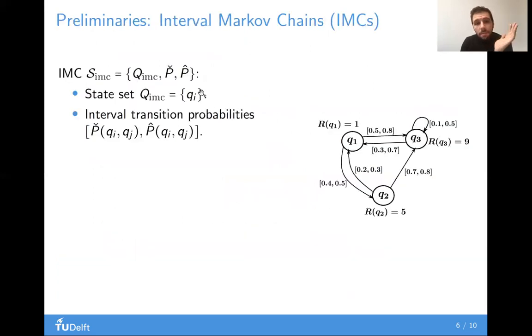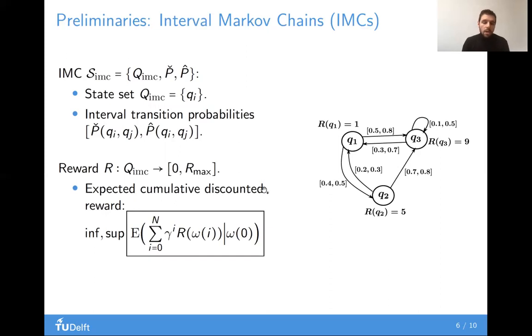So some preliminaries on interval Markov chains. Well, these are like regular Markov chains, but they have interval transition probabilities instead of concrete ones. They may be equipped with a reward function, as you can see here, and then we're able to argue about the expectation of the cumulative reward given some condition on the initial condition. What is important to note here is that in contrast to regular Markov chains, where this expectation obtains a specific single value, here it obtains a whole range of values because we're dealing with interval transition probabilities. But efficient algorithms exist to compute the infimum and the supremum of this range.